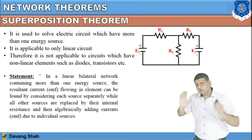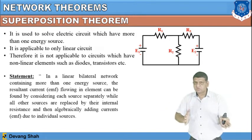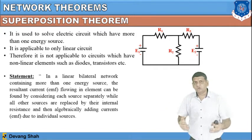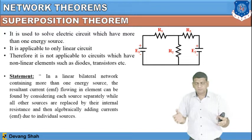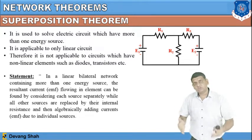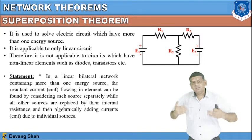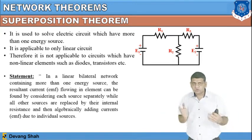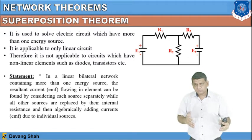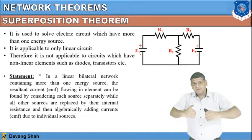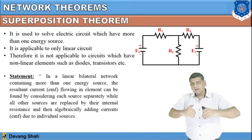In this particular network, there are two voltage sources. Let's say I want to find the current passing through resistance R2 or the voltage across R2. I have to consider the effects of both E1 and E2. Once you consider both effects of E1 and E2 on resistance R2, you proceed with the superposition approach.